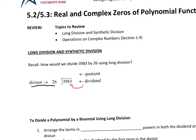To do that, remember what we do: we say how many times will 26 go into 3? It can't, so we go to the next one — 39. 26 goes into 39 one time. So we do 1 times 26, which is 26. Then we subtract: 39 minus 26 equals 13.